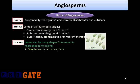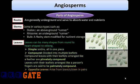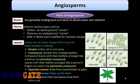Leaves can come in many shapes, from round to heart-shaped to oblong. A leaf can be simple — that is, entire, all in one piece — or it can be compound, divided into multiple leaflets. Compound leaves with leaflets arranged like a feather are called pinnately compound, and leaves with leaflets arranged like a person's fingers are said to be palmately compound. Leaves can be in opposite arrangement, arising from branch stems in pairs, or alternate, or whorled, where more than two leaves arise from the same place on the stem.